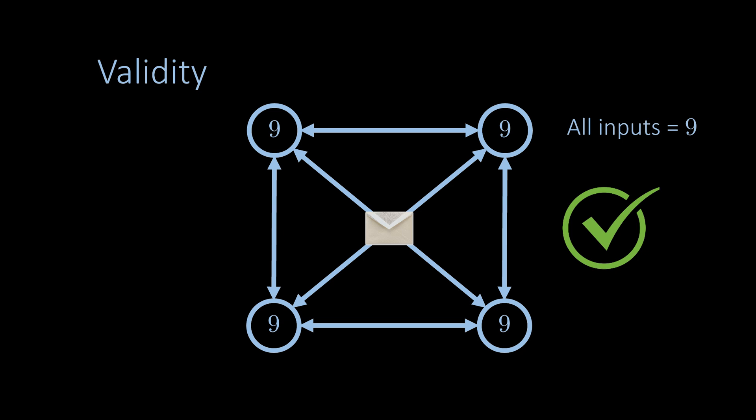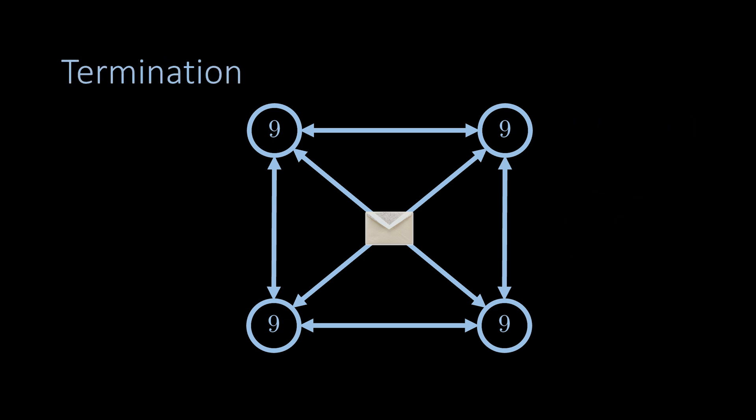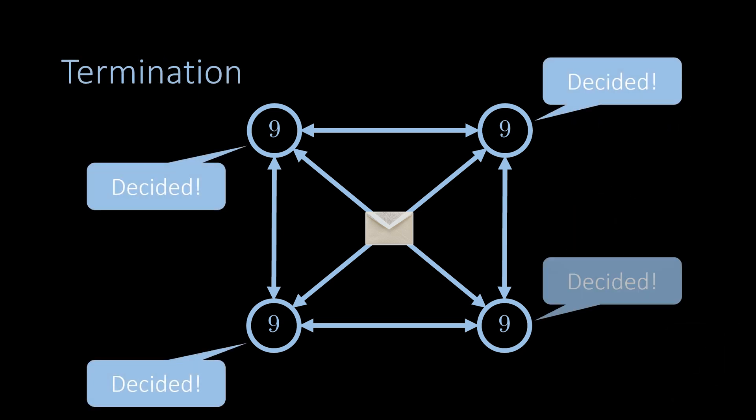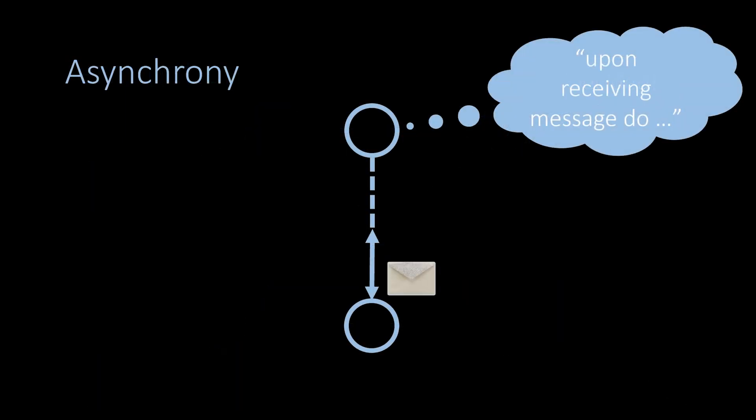Note that there are also other definitions of validity. Lastly, the third property is called termination, which says that all nodes must eventually decide on a value. We consider the consensus problem in the so-called asynchronous communication model.